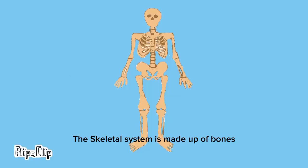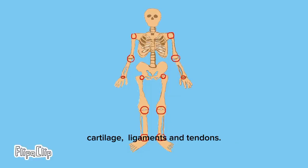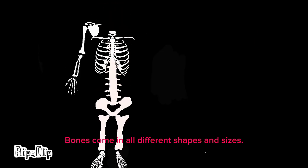The skeletal system is made up of bones, cartilage, ligaments and tendons. Bones come in all different shapes and sizes.